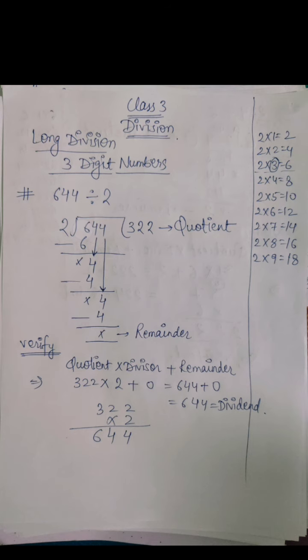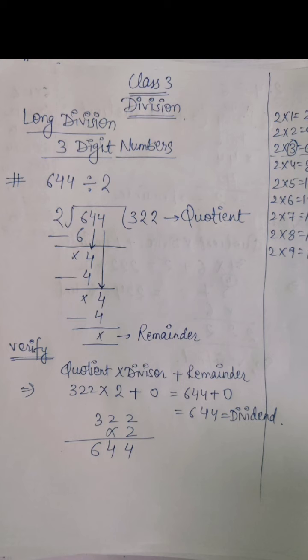First we will see the first digit, that is 6. 6 is a bigger number than 2. That means our work will go on with 6. So now what we will do? We will find 6 in 2's table. That means 2 ones are 2, 2 twos are 4, 2 threes are 6. So I got 6. So I will write 2 threes are 6. Now next thing: 6 minus 6 is 0. Now I will put the next digit, put the 4 here.